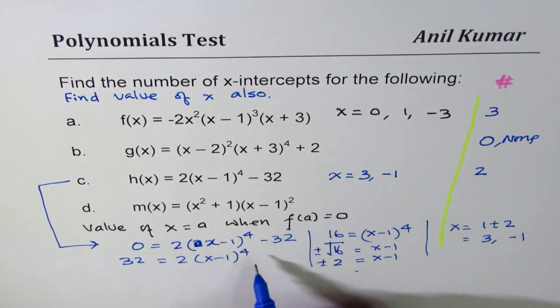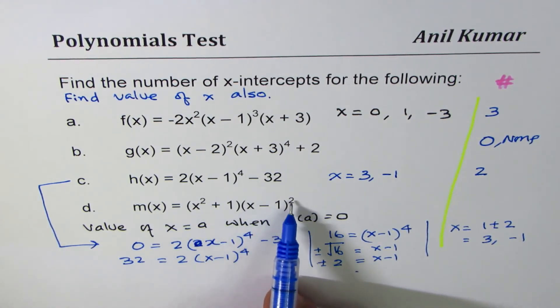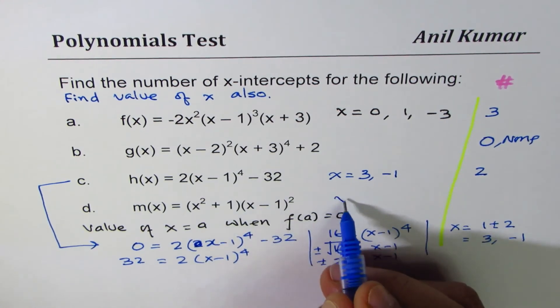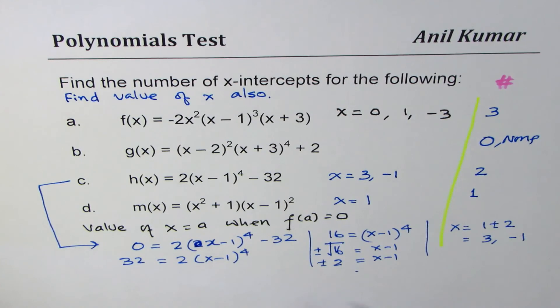In this equation, (x² + 1)(x - 1)², x² + 1 is never 0, but the other factor x minus 1 is going to be 0 at x equals to 1, and so we have only 1 zero. So that is how for different kinds of equations we can find the x-intercepts and count them.